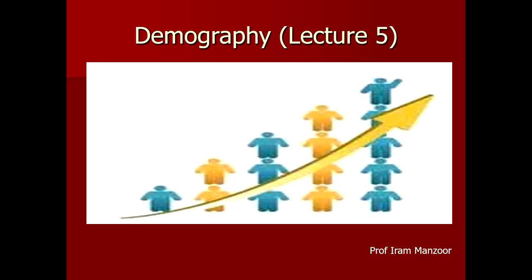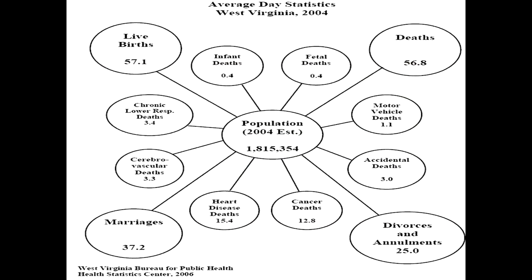Today we are going to start with demography lecture number five, discussing how the population of our country changes. There are special vital events that cause population change. As discussed in our last lectures, these are births, deaths, marriages, and divorces, which mainly affect the population of our country.